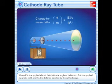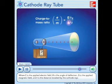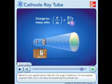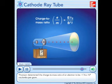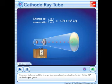Where E is the applied electric field, theta is the angle of deflection, B is the applied magnetic field, and L is the distance traveled by the cathode rays. Thomson determined the charge to mass ratio of an electron to be negative 1.76 times 10 to the 8th coulombs per gram.